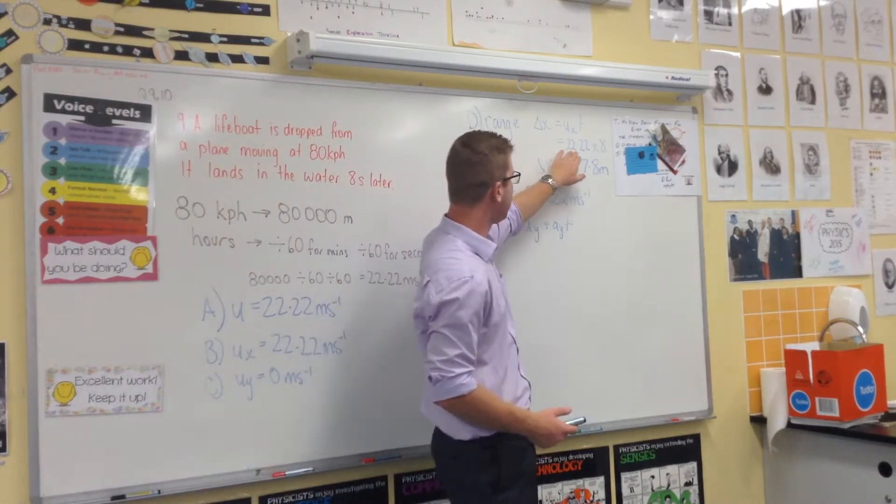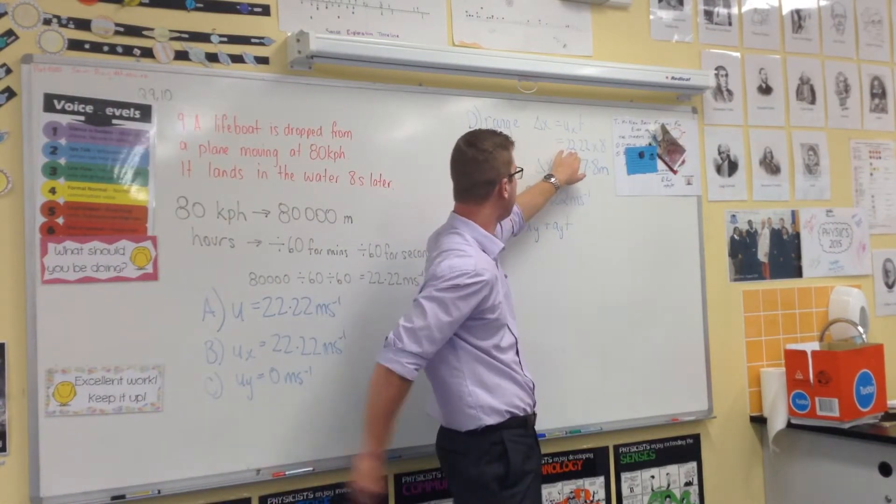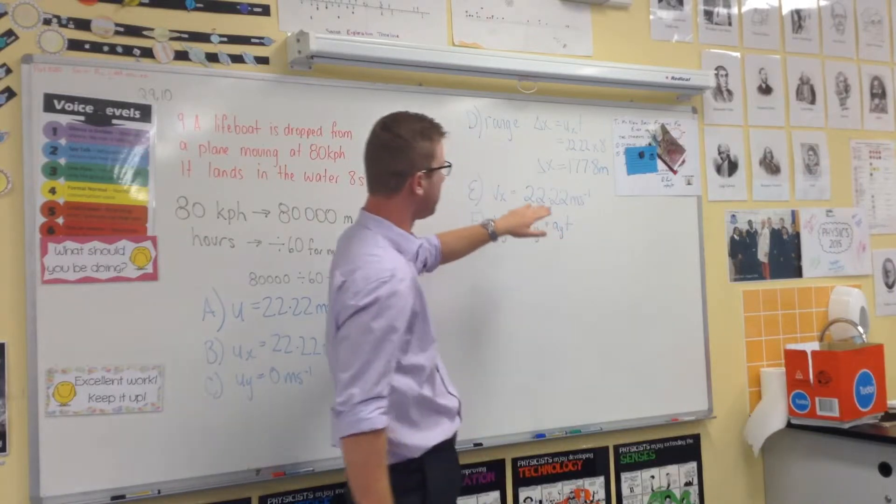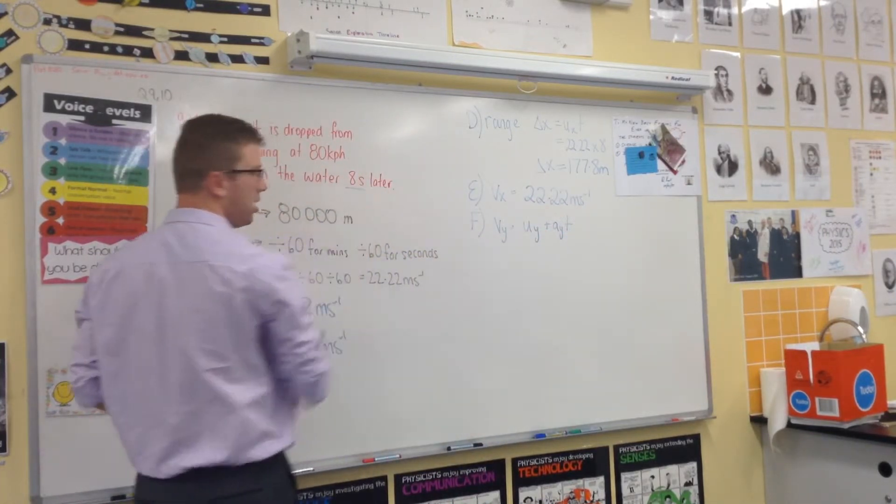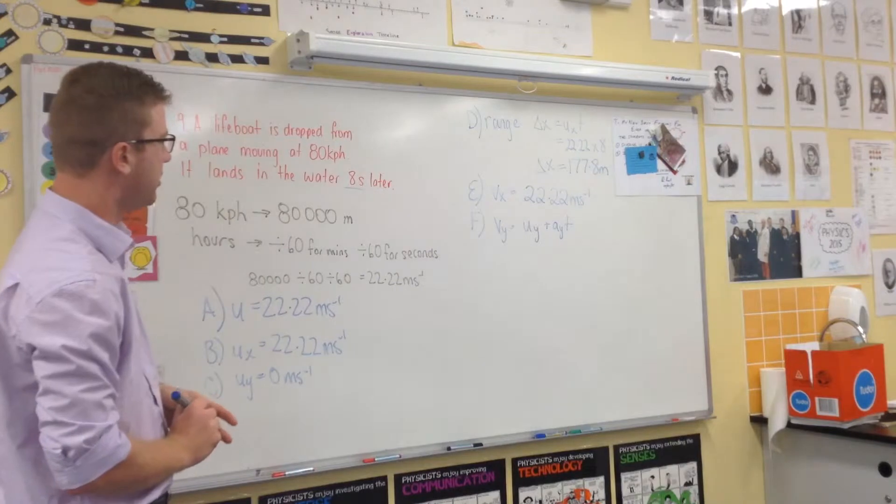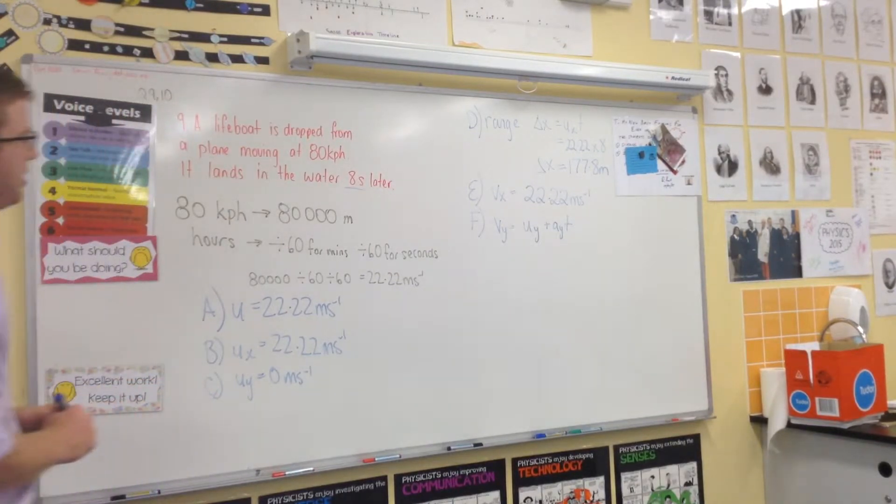Range—we're using UX, which is already given to you from that answer: 22.22 times 8 seconds, which is given to you there. Times those two numbers together and you get 177.8.